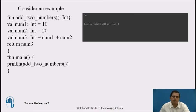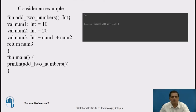Consider an example where we want to add two numbers using a function. The function is named add_two_numbers and returns an integer. Inside: val num1: Int = 10, val num2: Int = 20, val num3: Int = num1 + num2, return num3. In the main function, println(add_two_numbers()) calls the function defined above and executes the code. The answer is 10 + 20 = 30, so num3 returns 30 to the main function.